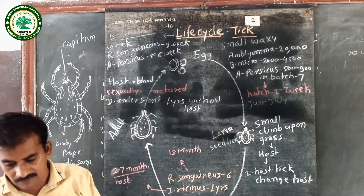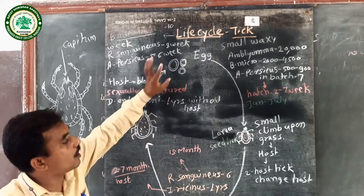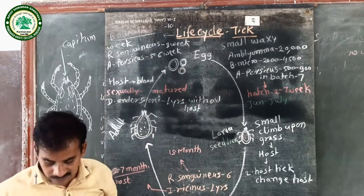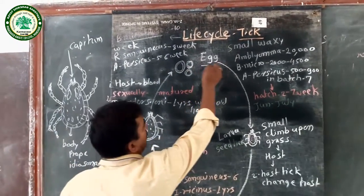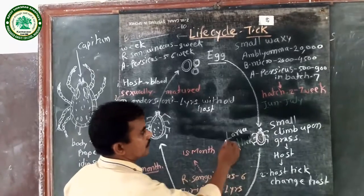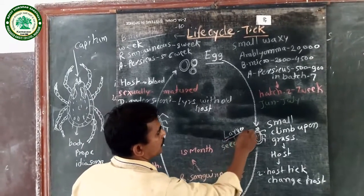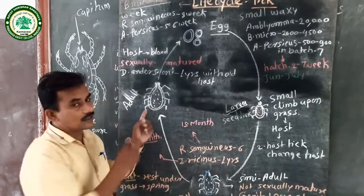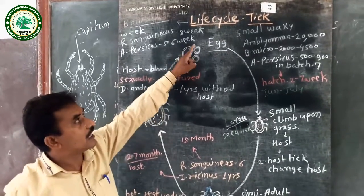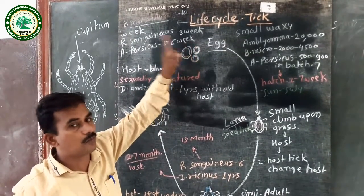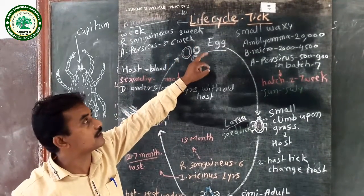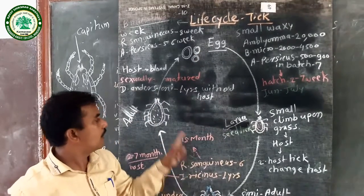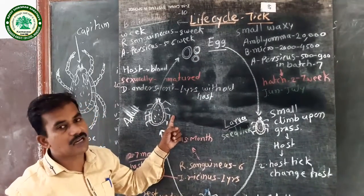The life cycle consists of four different stages. The first stage is the egg, the second is the larva, the third is the nymph, and the fourth is the adult stage. That is, the life cycle of the tick Boophilus microplus consists of eggs, larva, nymph, and then adults.